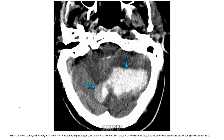Let's see the example. This is axial non-enhanced CT showing a large high-density mass in the left cerebral hemisphere representing cerebral hemorrhage, indicated by the solid arrow, with some adjacent area of slightly less dense signal indicated by the curved arrow, indicating active bleeding.